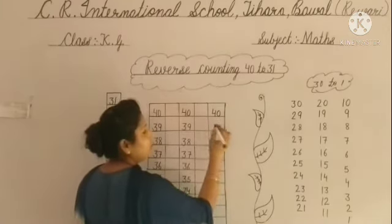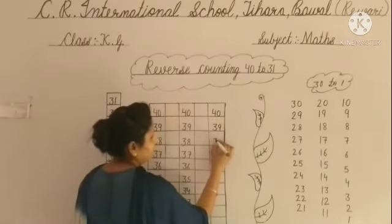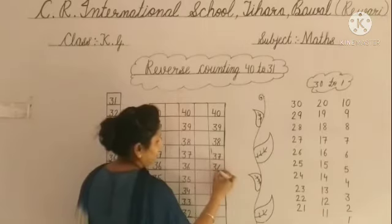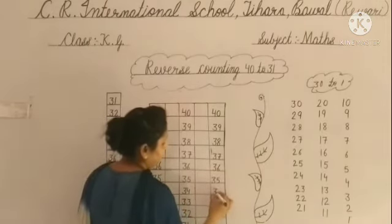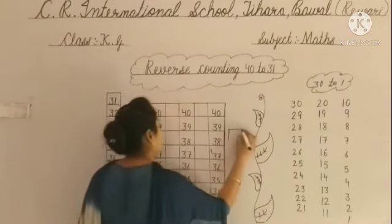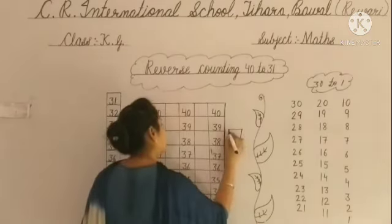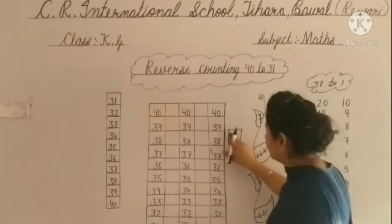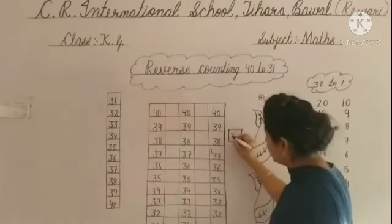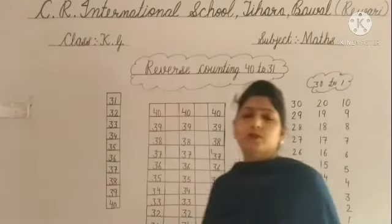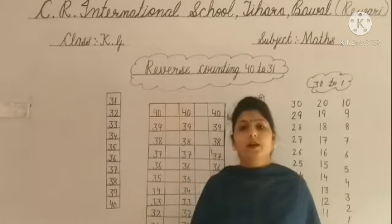Now: 40, 39, 38, 37, 36, 35, 34, 33, 32 and 31. One more time — you are going to start the box with the line from here. You have to start the box with the space. To do this work, to do this reverse counting, practice and learn to do this.